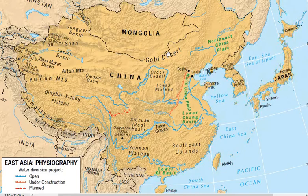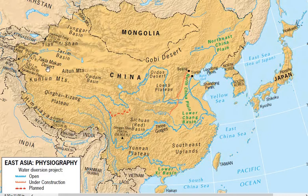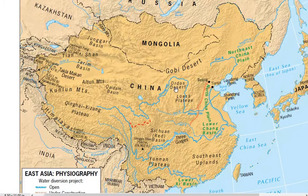Now let's look at the famous deserts. The most famous desert of this realm is the Gobi Desert, followed by the Taklamakan Desert. The third desert is the Ordos Desert. So three deserts are notable in this realm.